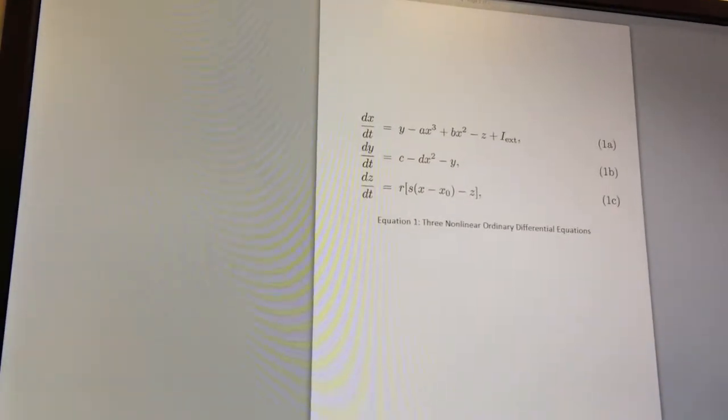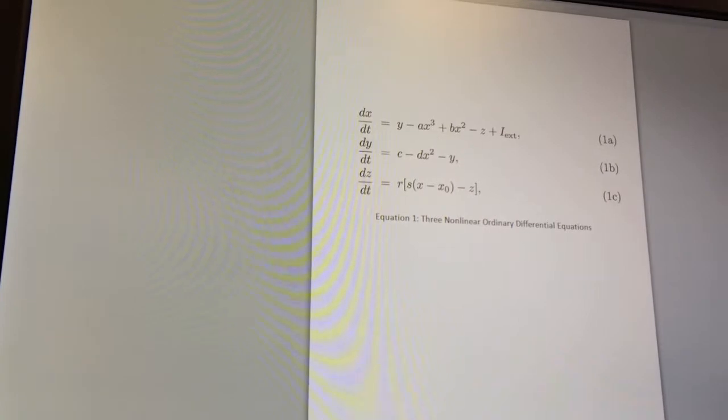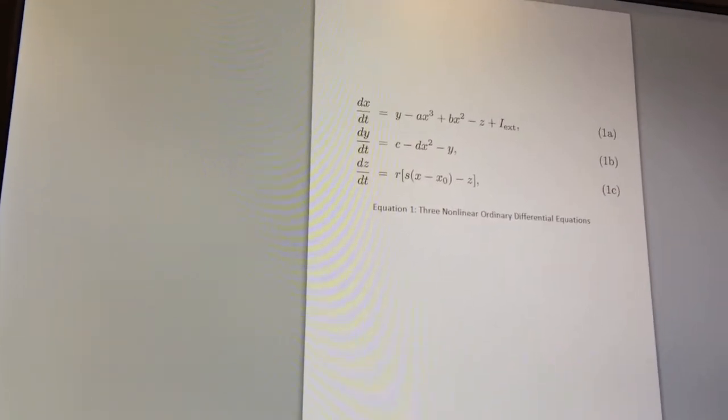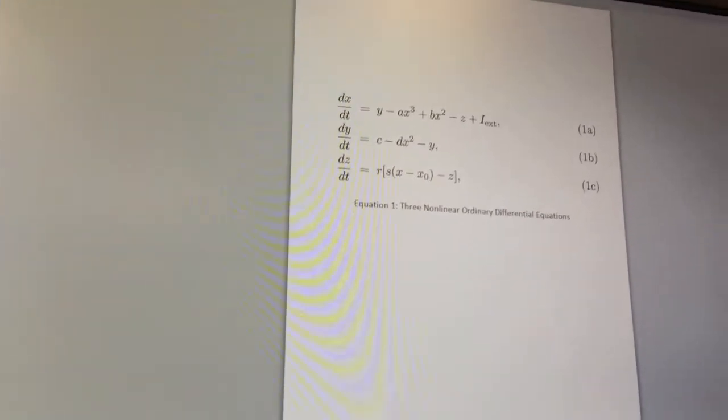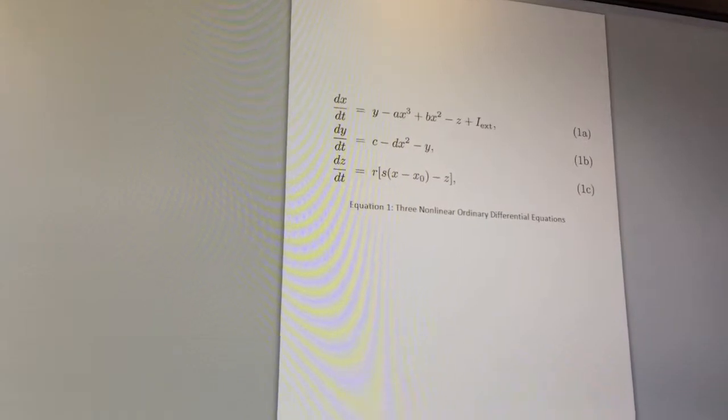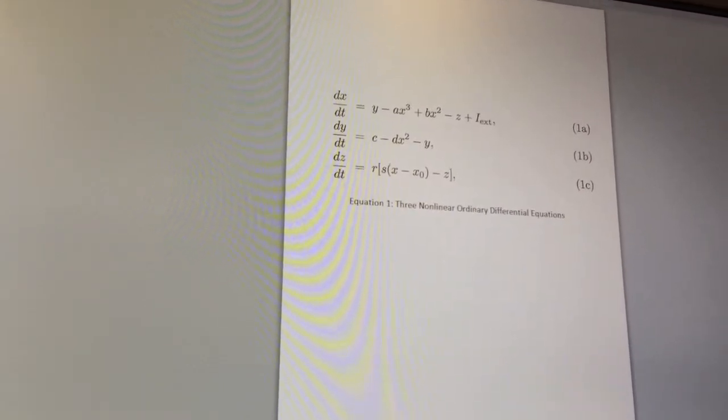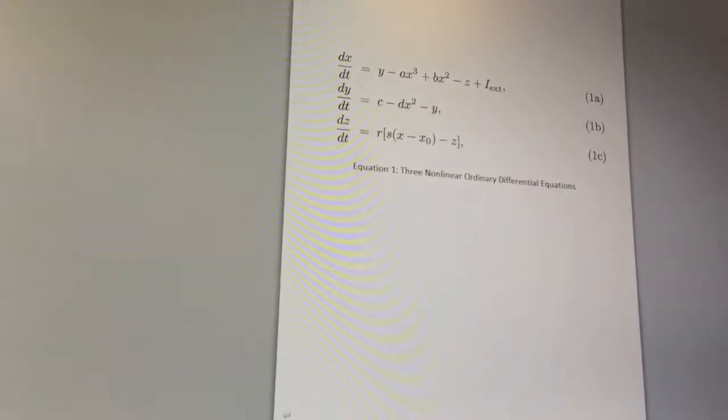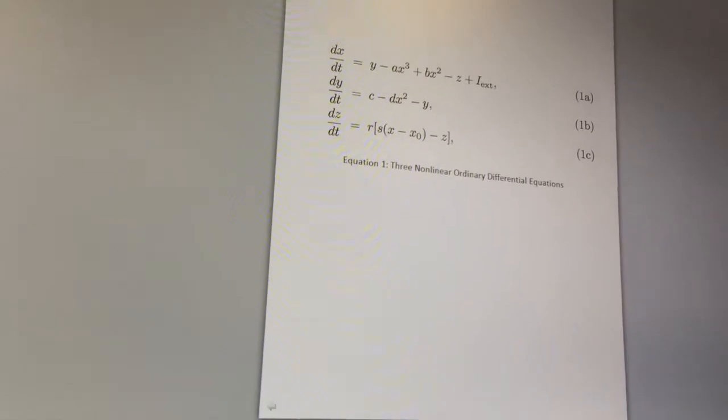Now, the X variable is the membrane potential. The Y variable is the rate of ion transport of sodium and potassium. Whereas the Z variable is the burst variable. And neurons in nature do not spike or burst indefinitely and often remain silent until activated. The Z variable is what activates or provides this.